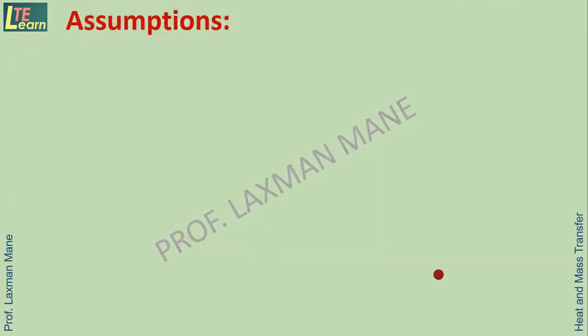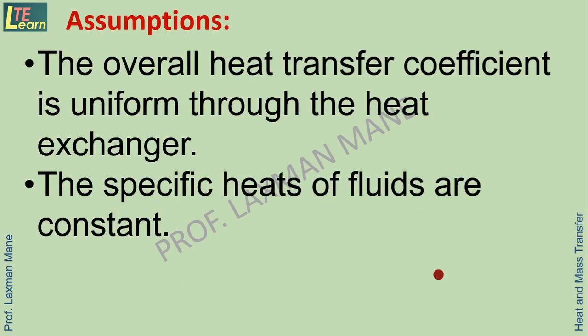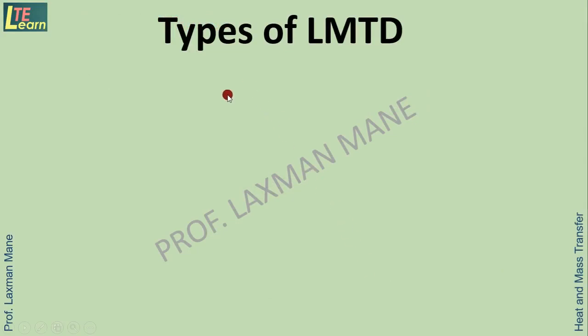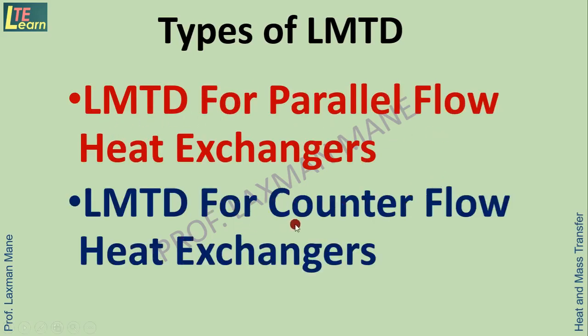Here are some assumptions. The overall heat transfer coefficient is uniform throughout the heat exchanger. The specific heats of fluids are constant. And the potential and kinetic energy changes are negligible. With these assumptions, there are mainly two types of LMTD: LMTD for parallel flow heat exchangers and LMTD for counter flow heat exchangers. In this video session we will see LMTD for parallel flow heat exchanger.